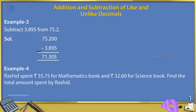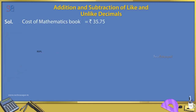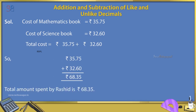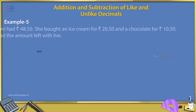Example 4: Rashid spent Rs. 35.75 for a mathematics book and Rs. 32.60 for a science book. Find the total amount spent by Rashid. Solution: Cost of mathematics book = Rs. 35.75. Cost of science book = Rs. 32.60. Total amount spent by Rashid = Rs. 68.35.